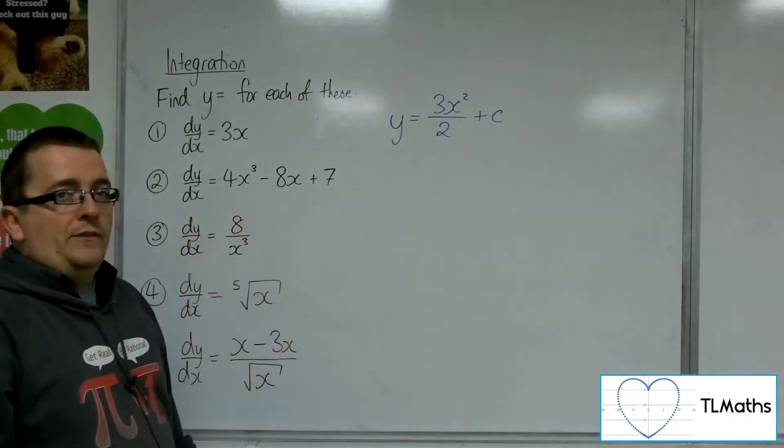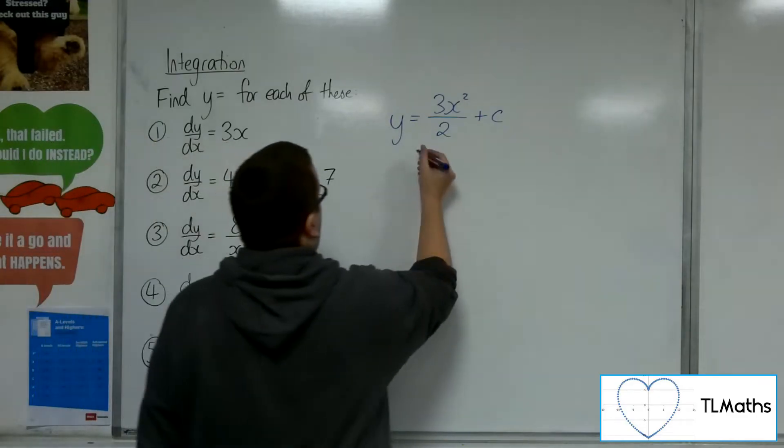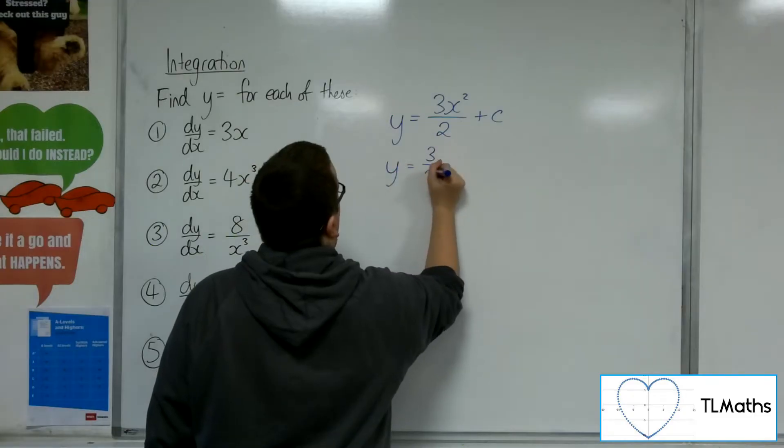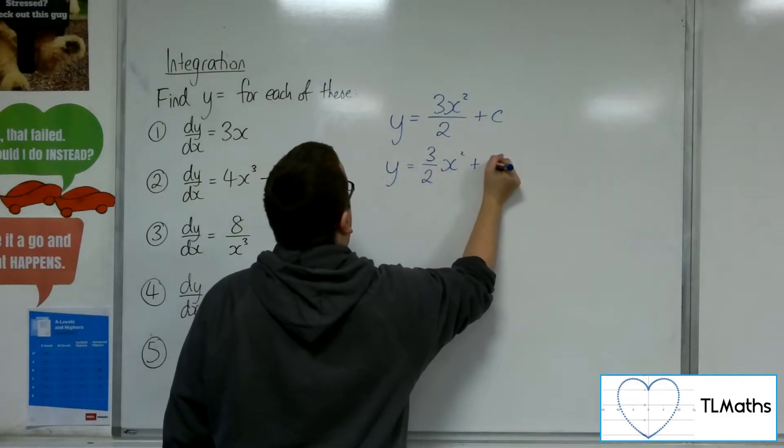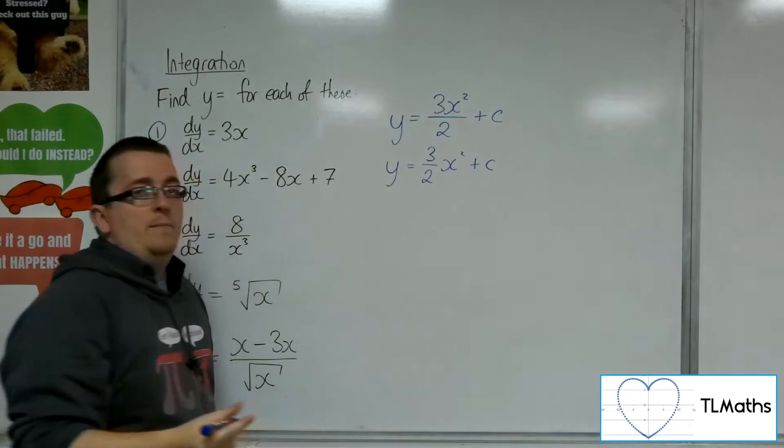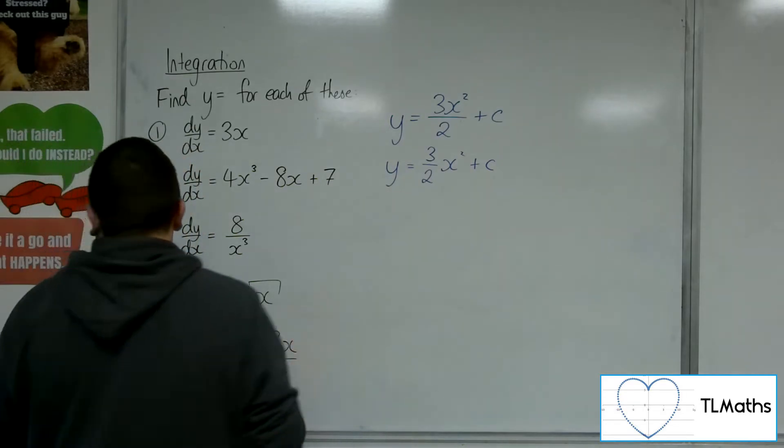Now, that's perfectly good as an answer. Remember, you could also write that as 3 halves x squared plus c, either or. Both of them mean the same thing. So, that's the first one.